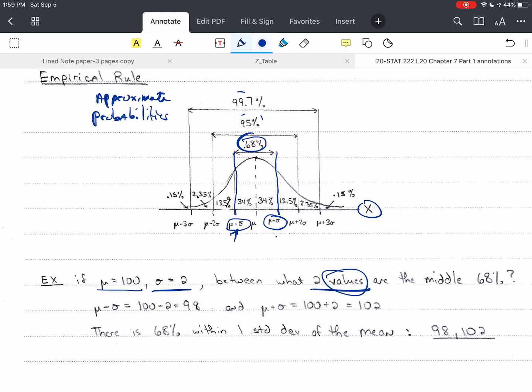So mu minus sigma. For mu, I plug in 100. For sigma, I plug in 2. So mu minus sigma is 100 minus 2. That's 98. So this is 98. And then I do the same thing for mu plus sigma. I need to plug in for mu, which is 100, and sigma, which is 2. So again, mu goes to here. Sigma goes to here. There's a plus sign, 100 plus 2 is 102. This value here is 102. And so there is 68% of the total population or probability within one standard deviation of the mean, and the values are 98 to 102.